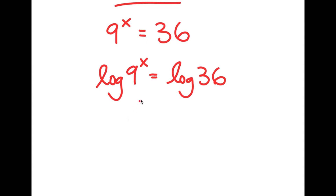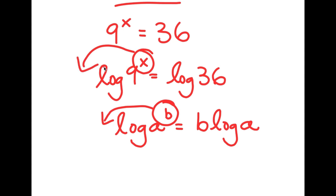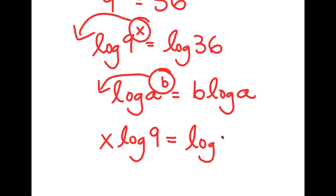An important property of logarithms is that if I have something in the form log a to the power of b, I can move this exponent b to the front. So this is going to equal b times log a. In this case, I have log 9 to the power of x, and I can move x to the front. So this gets me x times log 9 is equal to log 36.